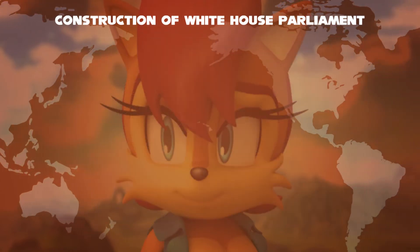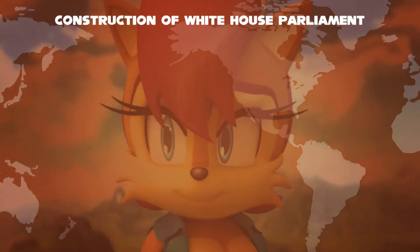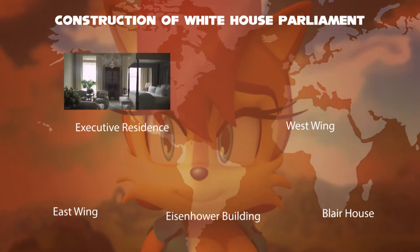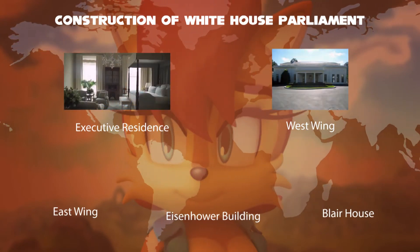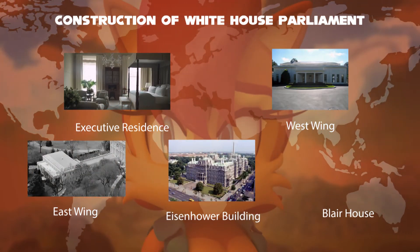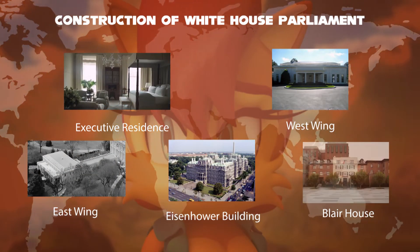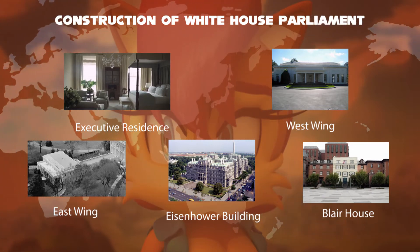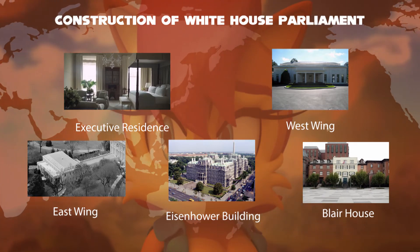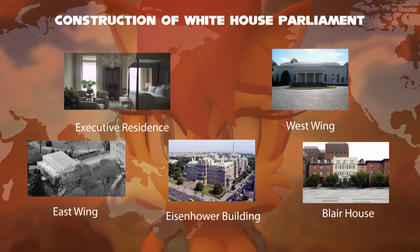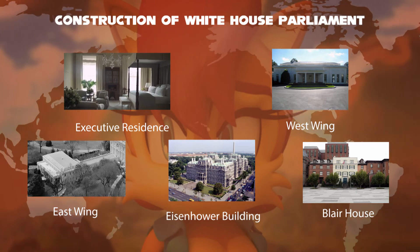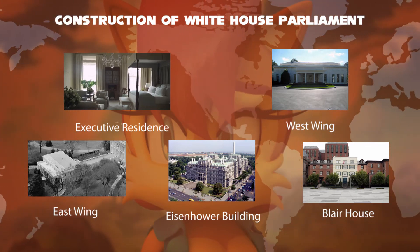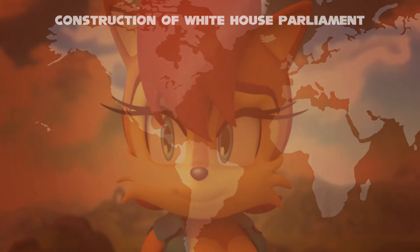The modern-day White House complex includes the Executive Residence, the West Wing, the East Wing, the Eisenhower Executive Office Building, and Blair House, a guest residence. This video is about the construction of the White House in Washington DC.